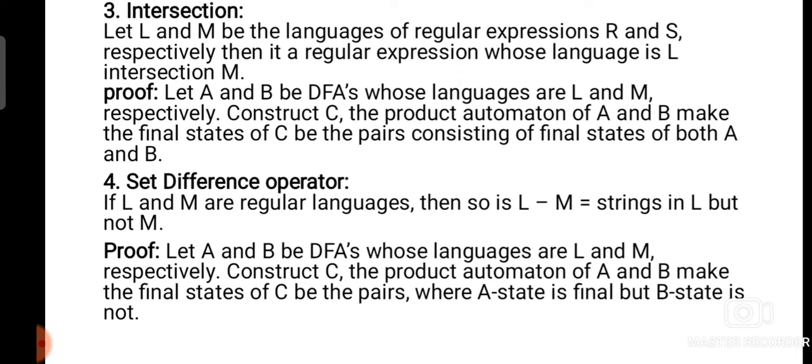Let A and B be the DFAs whose languages are L and M respectively. When we construct C, the product automaton of A and B, we make the final states of C be the pairs where A's state is final but B's state is not final.